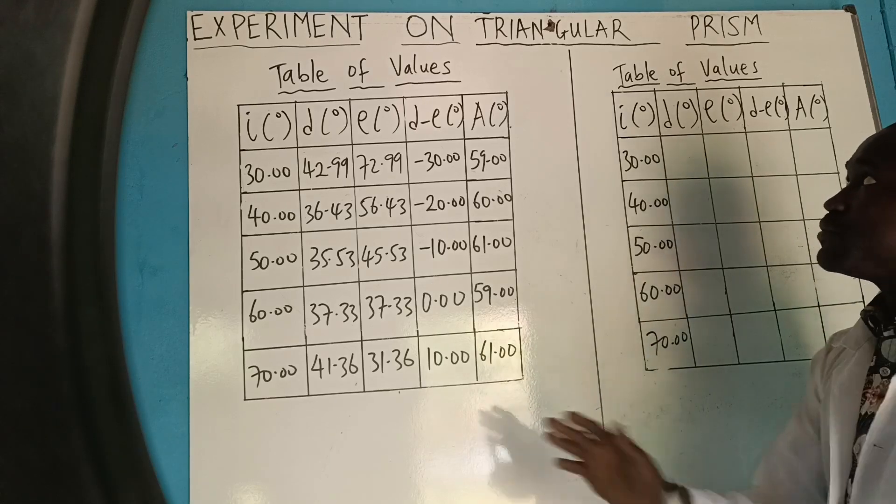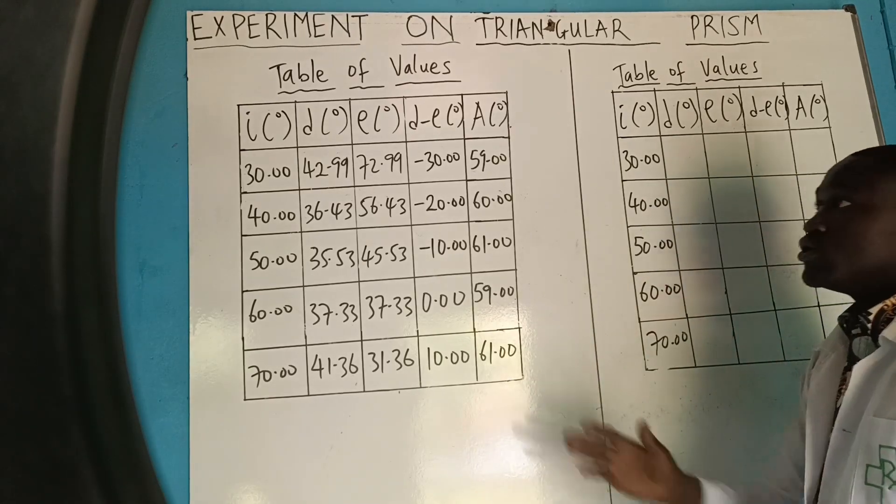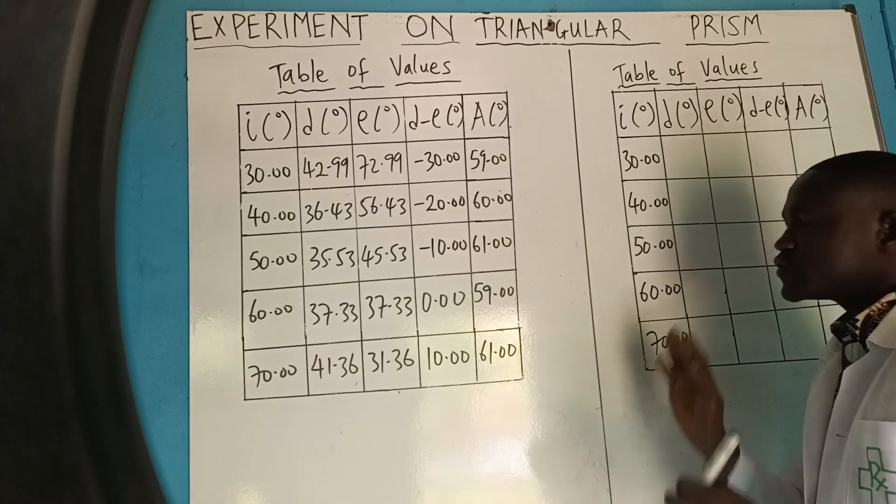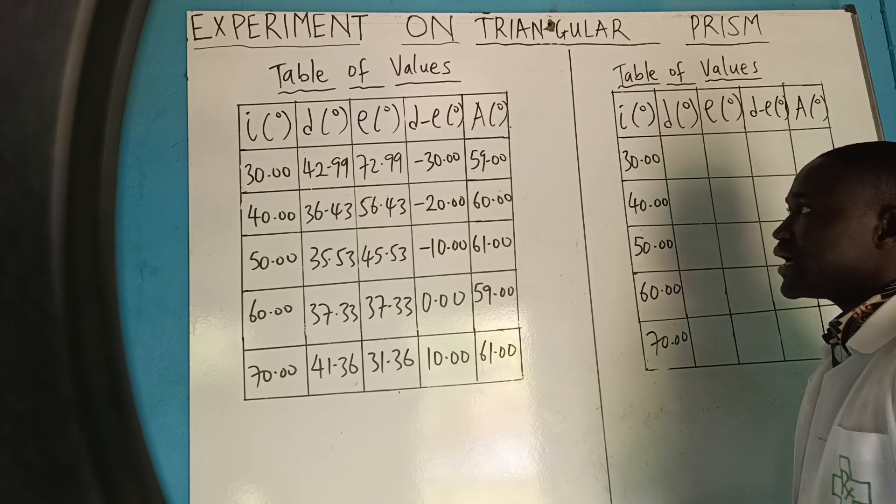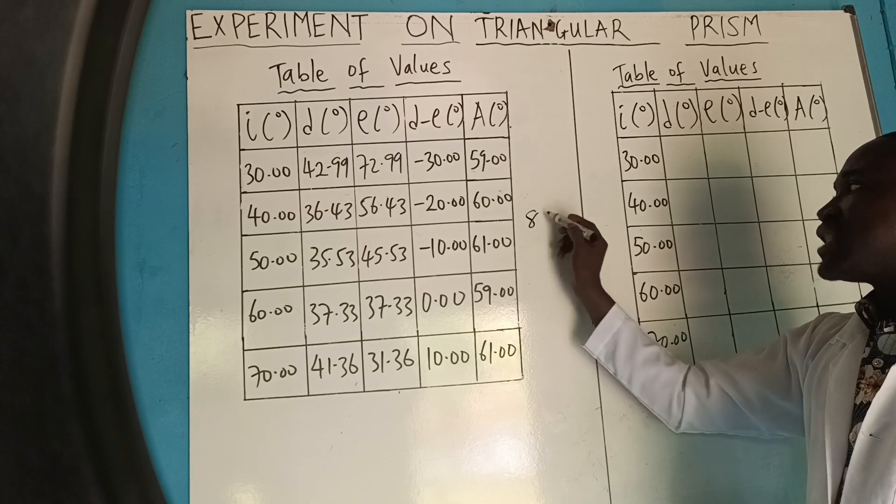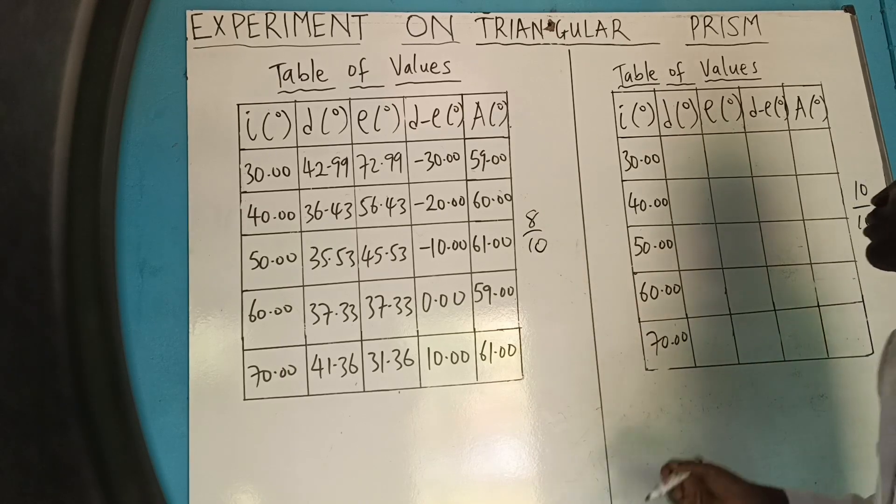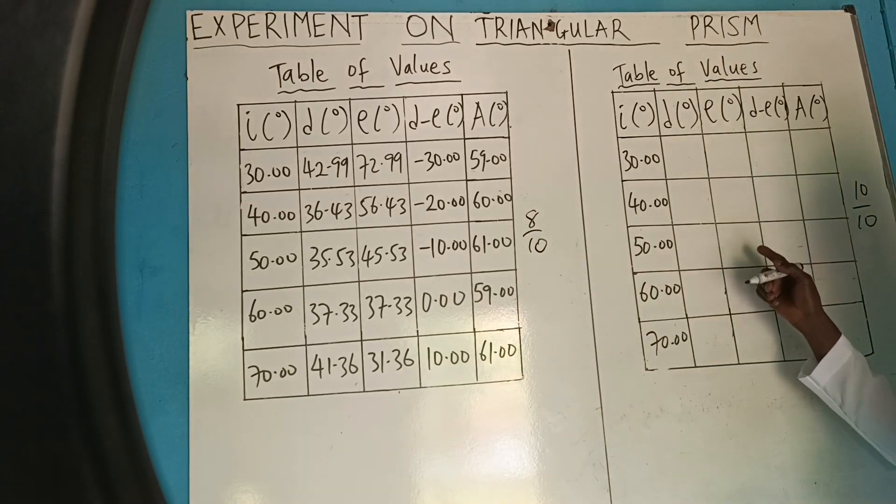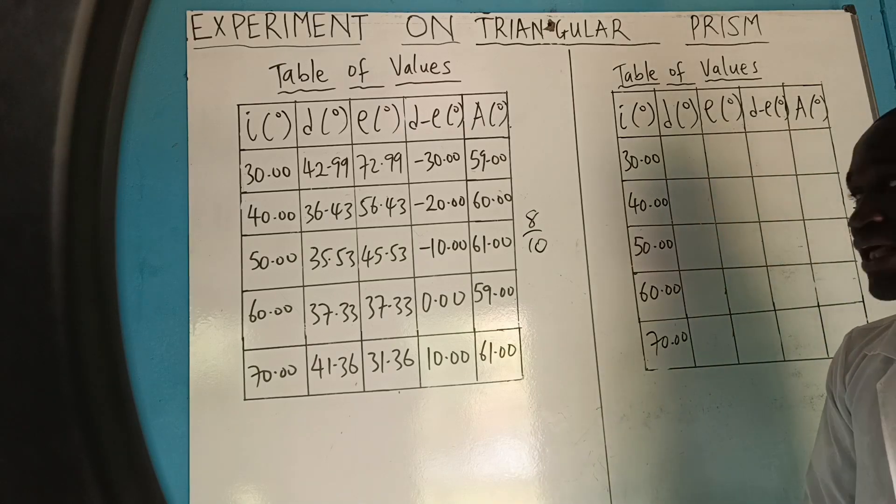Okay, so when you are done with this experiment on Triangular Prism, you have got your table, plot your graph, solve all the questions they ask you to get. If you submit this table, you will likely get about 8 over 10, but if you submit this one we have to do, you will get about 10 over 10.